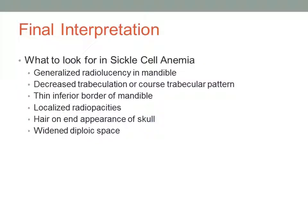When making a final diagnosis of sickle cell anemia, one needs to look for typical features including generalized radiolucency in the mandible, a decrease or coarse trabecular pattern, a thinning of the inferior border of the mandible, or localized radiopacities. In addition, a hair-on-end appearance of the skull or widened diploic space are also common.